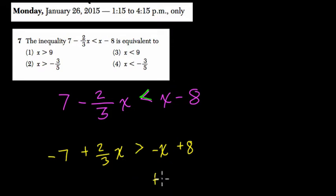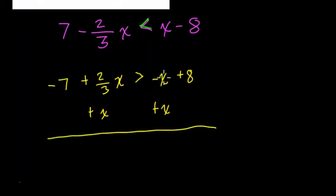Now to solve this problem, we'll get x's on one side. We'll add x to both sides, and then scroll down a little bit. So here, these x's cancel out to 0. We still have 8.